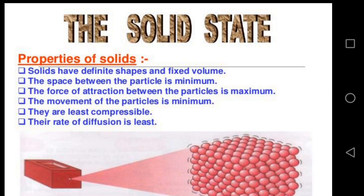That's why solids are rigid and the movement of particles is minimum in the solid state. Since the constituents in the solid state are very closely packed, they have negligible kinetic energy and are generally incompressible — it is very difficult to compress a solid. However, there are some exceptions; for example, a sponge is easily compressed because small pores are present in it, in which air is present. When we apply pressure, air is expelled from these pores and the sponge gets compressed.